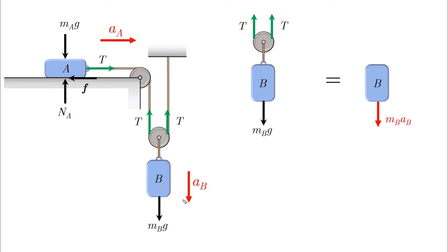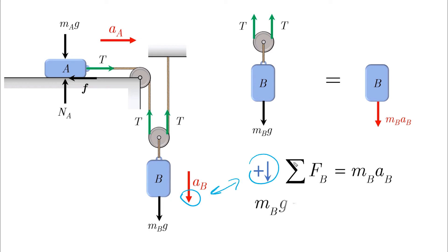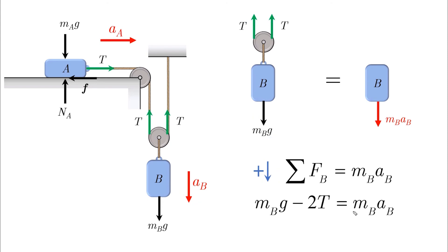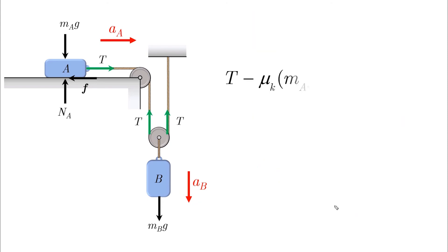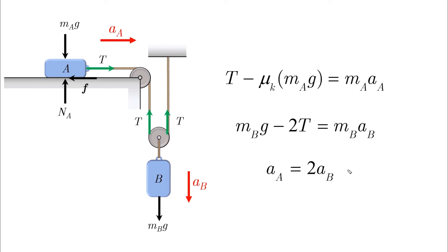For block B, the free body diagram shows two tensions and the weight. Taking positive downward, consistent with the assumed direction of motion: mBg minus two times T equals mB times aB. This is our second equation of motion. Together with the acceleration relationship AA equals 2AB as our third equation, we have three equations to solve for three unknowns: the tension, the acceleration of A, and the acceleration of B.